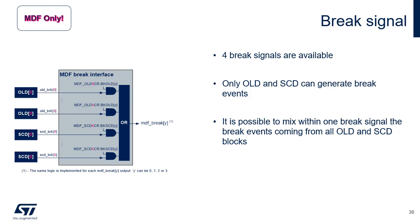Four break signals are available. Timer break inputs put the timer's output signals in a safe user-selectable configuration in the event of an abnormal condition. Only out-of-limit detectors or OLD and short-circuit detectors or SCD can generate break events. It's possible to mix within one break signal the break events coming from all OLD and SCD blocks. This is achieved by the OR gate in the figure.